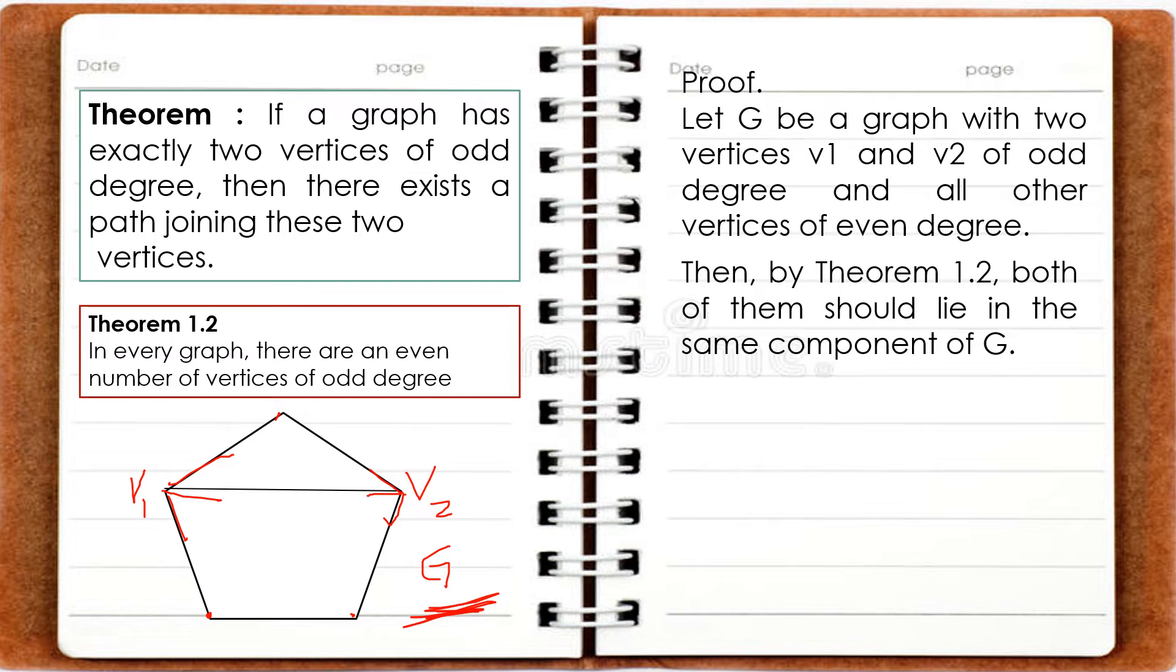There are two vertices with odd degree, so it's an even number of vertices. Therefore, we can say that by Theorem 1.2, both V1 and V2 belong to one graph, or the same component of G.